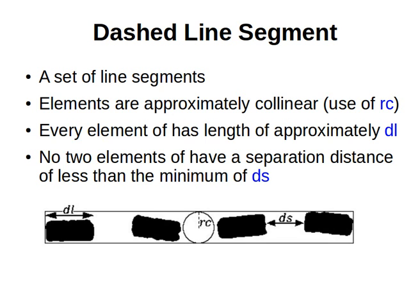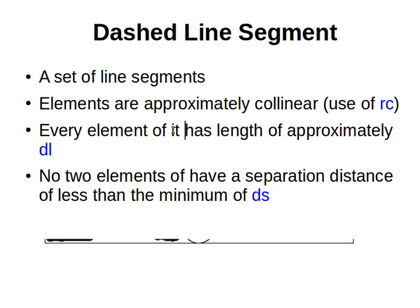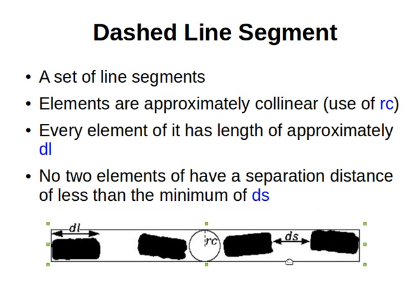Let's define what a dashed line segment is. It's a set of shorter line segments, a set of these dashes. Elements are approximately collinear within RC, the radius of collinearity. Every element has a length of approximately dl (dash length), and each two consecutive dashes will be away from each other by a distance we'll name ds.